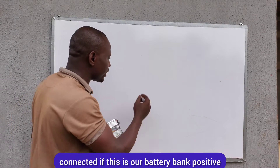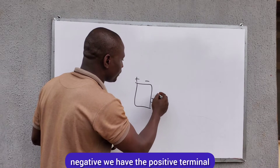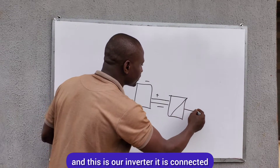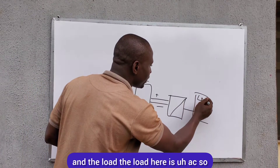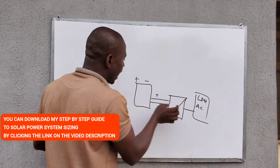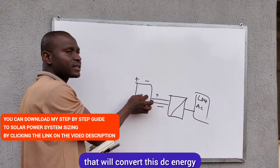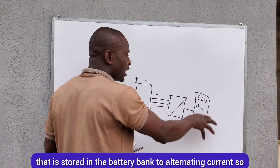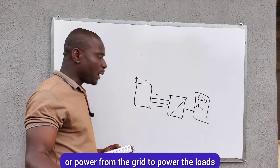The inverter is connected between the battery bank and the load. If this is our battery bank — positive, negative — we have the positive terminal and the negative terminal. This is our inverter. It is connected between the battery bank and the load, and the load here is AC. So if we have AC loads and a battery bank that is DC, we need something that will convert this DC energy to alternating current, so that we can power our loads just like we would using a generator or power from the grid.